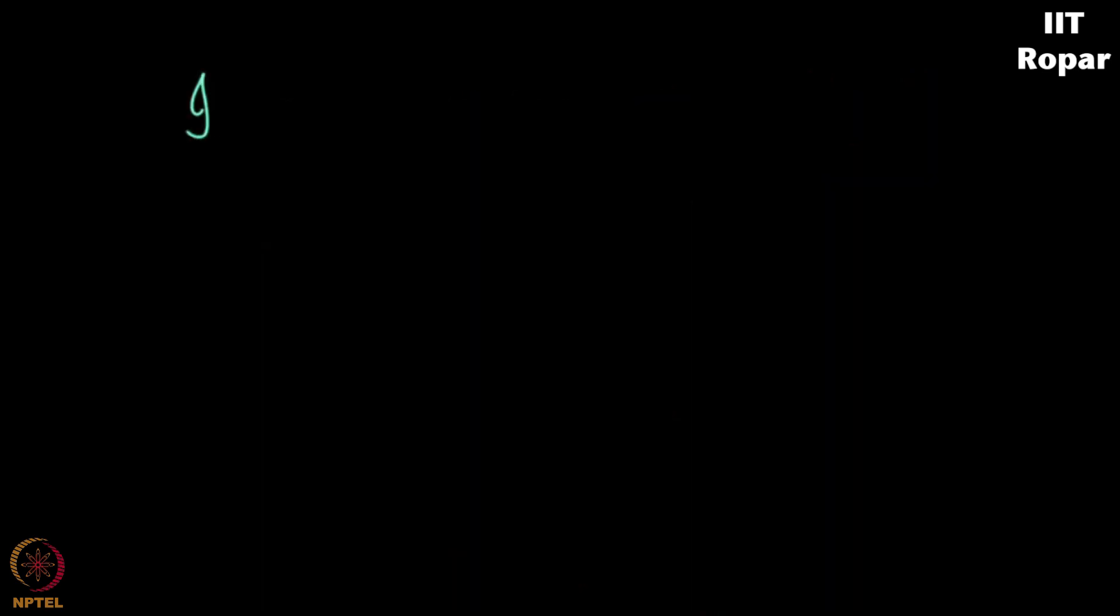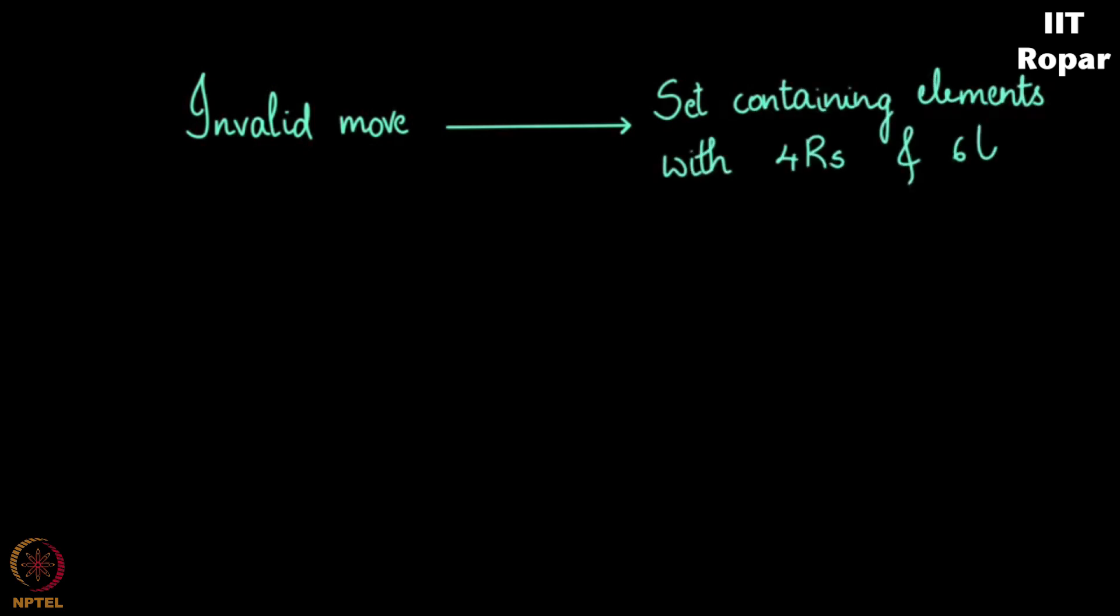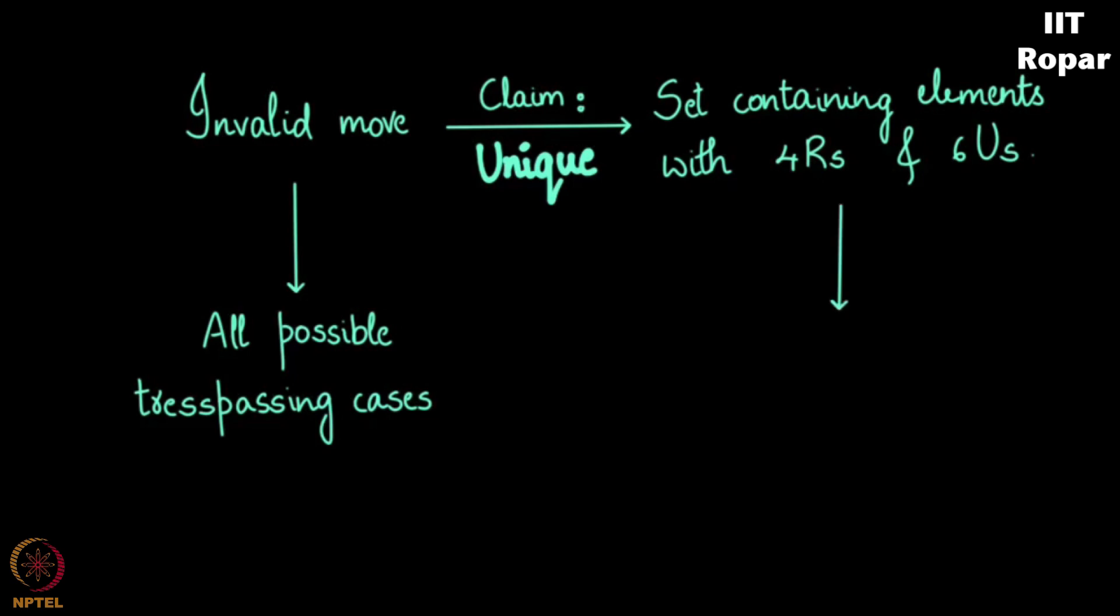Now what exactly happened so far? I took an invalid move and I created a unique mapping to a set containing elements with 4 R's and 6 U's, and my claim right now is this mapping is unique. Unique in what sense? Every element on this side - on which side? On the left side. What does that denote? It denotes all possible trespassing cases on the left side, and on the right side all possible 4 R's and 6 U's and its combinations.